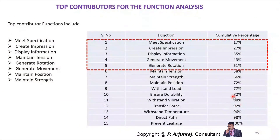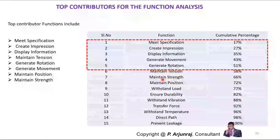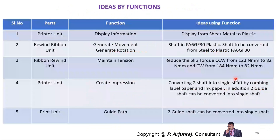Pareto may not be accurate here, but that does not mean we should not select ideas. It depends on time and other parameters. I have taken the top five functions as the top cost-contributing functions, and I am writing them down. Then I am going to generate ideas from those functions — like converting sheet metal to plastic.